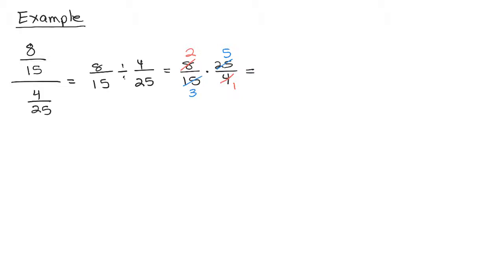And so in the numerator I have 2 times 5 which is 10. In the denominator I have 3 times 1 which is 3, and we just leave our answer as a fraction. No need to write it as a mixed number. In fact, usually it's preferred that you leave it in that form. That was method one.